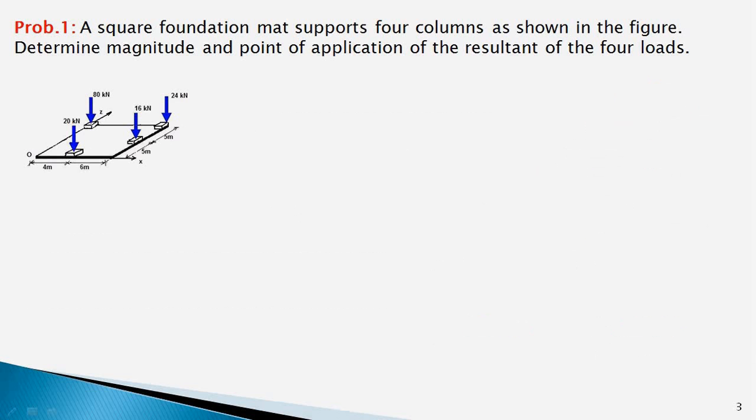The loads are all parallel to each other along Y axis and we can assume the Y axis to be pointing in downward direction. So, the resultant R would be equal to sum of the forces F1, F2, F3 and F4 and this would yield R equal to 140 kN pointing in downward direction.